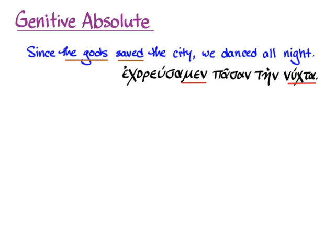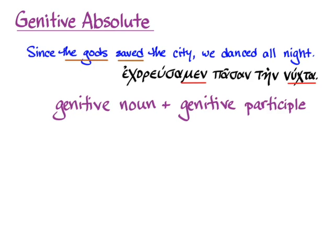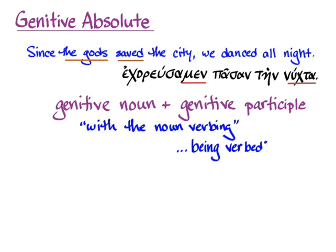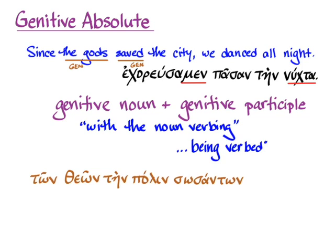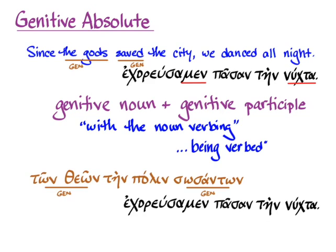What we can do is use the formula for the genitive absolute: a genitive noun plus a participle that agrees with it in the genitive. The default translation is 'with the noun verbing,' or if the verb is passive, 'with the noun being verbed,' and of course there are middle translations as well. So with our sentence, we take 'the gods' and put them in the genitive and make the participle agree with them in the genitive, giving us 'ton theon ten polin sosanton.' That means, along with our main clause in Greek: 'with the gods saving the city, we danced all night' — a very good translation of 'since the gods saved the city, we danced all night.'